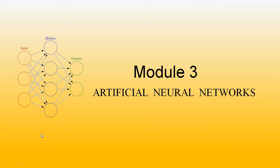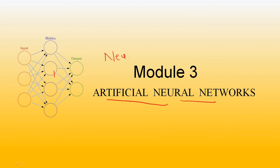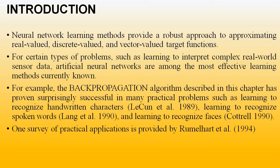Hello students, welcome to the video lecture on Machine Learning. In the last video, we started with module number 3, that is Artificial Intelligence and Neural Networks. We have already discussed what is a Neural Network and the concept of Artificial Neural Network. I have explained where the term Neural Network is derived from — it is derived from the neurological word Neuron, which is a brain cell. In the last video, I already discussed about this.